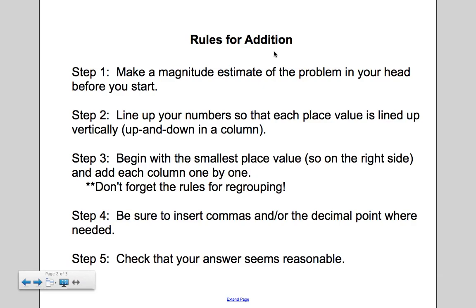Step one, when you're adding, is to make a magnitude estimate of the problem in your head before you start. Now, a magnitude estimate is kind of a fancy name for one of those ballpark estimates. So you're going to try to look at your problem, and you're going to round it to kind of friendlier numbers, or rounding to the nearest whole, picking things that work well in your head.